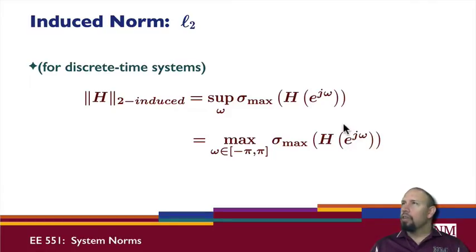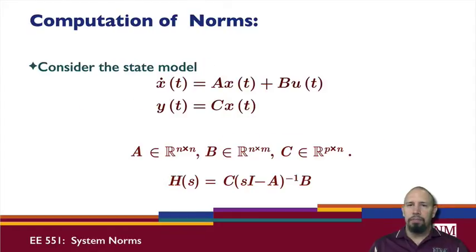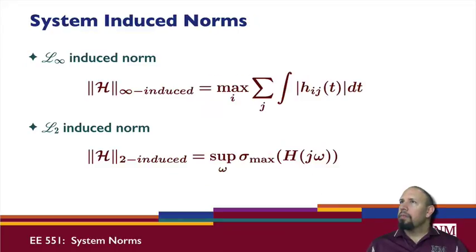This is the induced l2 norm for the system, for the transfer function H. If we assume the state model given here, so m inputs, p outputs, n states, here's our transfer function. Notice that in this case it's strictly proper.